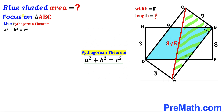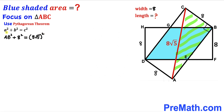Let's fill in the blanks in the Pythagorean formula. We get AB² + 8² = (8√5)², which simplifies to AB² + 64 = 320. Now we subtract 64 from both sides.